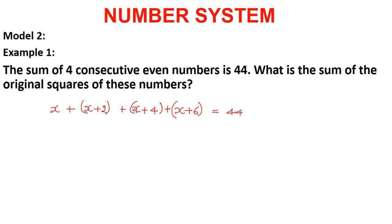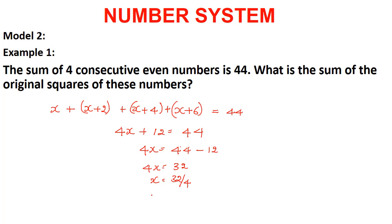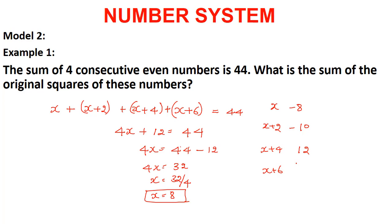Adding these gives 4x + 12 = 44. So 4x = 44 − 12 = 32, therefore x = 32 ÷ 4 = 8. So x = 8, and therefore x+2 = 10, x+4 = 12, and x+6 = 14. These are the four consecutive even numbers.